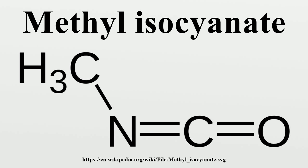Alcohols and phenols, which contain an OH group, react slowly with MIC, but the reaction can be catalyzed by trialkylamines or dialkyltin dicarboxylate. Oximes, hydroxylamines, and enols also react with MIC to form methylcarbamates. Ammonia, primary, and secondary amines rapidly react with MIC to form substituted ureas. Other NH compounds, such as amides and ureas, react much more slowly with MIC.